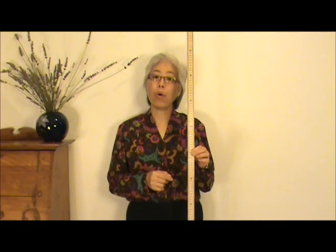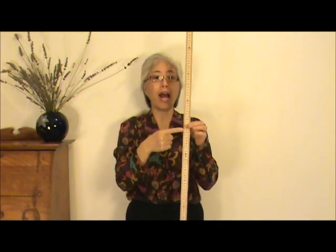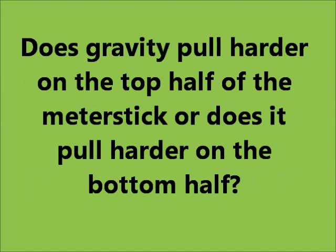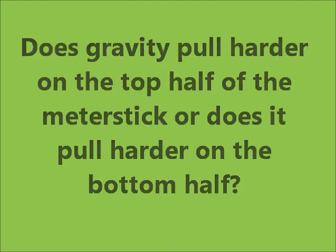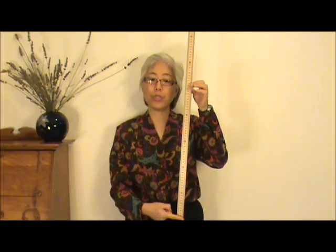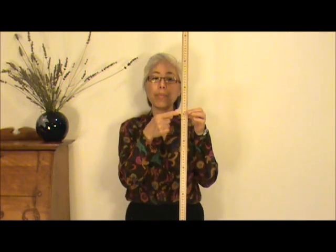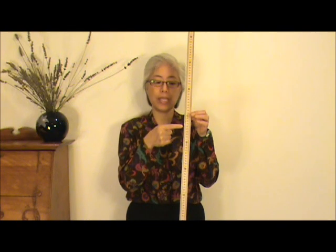Does gravity pull harder on the top half of the meter stick, or does it pull harder on the bottom half? The bottom half, because the bottom half is closer to the center of the earth, therefore the center of gravity will be very slightly below the center of mass.